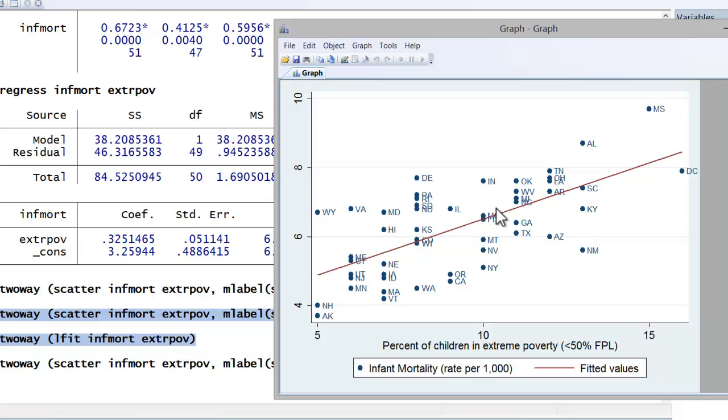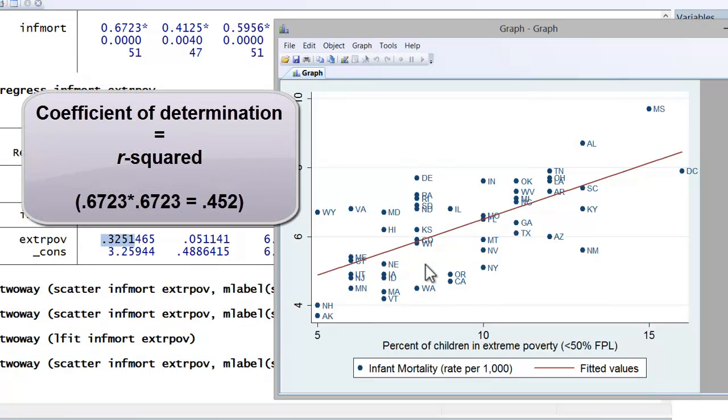Now let's talk about what we're seeing here. As you may recall, the correlation coefficient between the percent of children living in extreme poverty and the infant mortality rate is .67. That's actually considered a rather large correlation coefficient. You may also recall that the coefficient of determination was .452, meaning that 45.2% of the variation in infant mortality across states could be accounted for by the variation in the percent of children in extreme poverty.